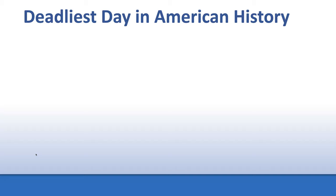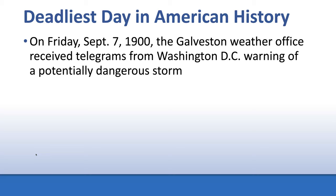The deadliest day in American history is September 8th, 1900. But to understand those events, we have to look at the day before. On Friday, September 7th, 1900, the Galveston Weather Office received telegrams from Washington, D.C. warning of a potentially dangerous storm. The storm had been traveling through the Atlantic Ocean for several weeks, had hit Cuba, and the weather service there had sent warnings via telegram that this massive storm was brewing and looked like it was going to hit Texas.